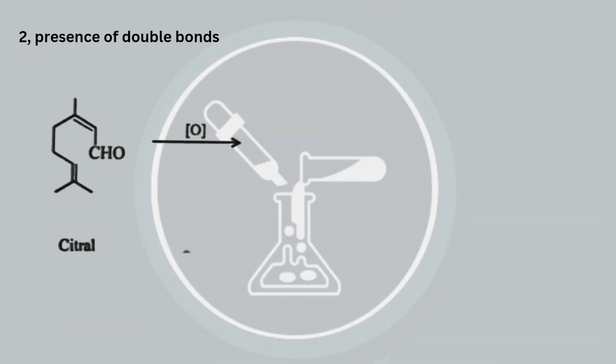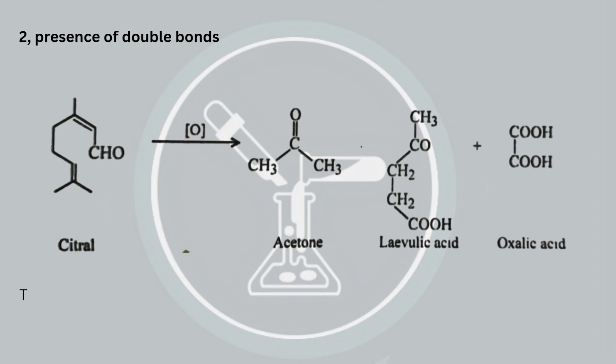Presence of double bonds. When citral is oxidized with alkaline potassium permanganate followed by chromic acid, it yields acetone, levulinic acid, and oxalic acid. The carbon chain breaks at two points to give acetone and oxalic acid.